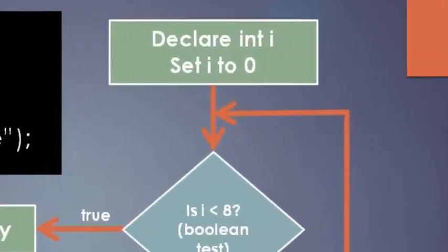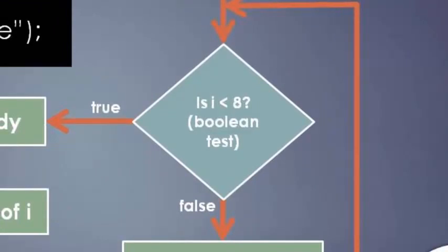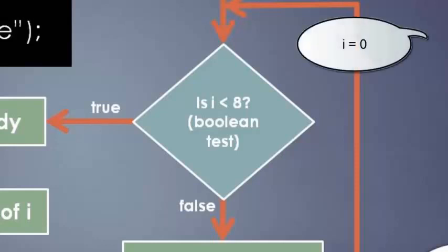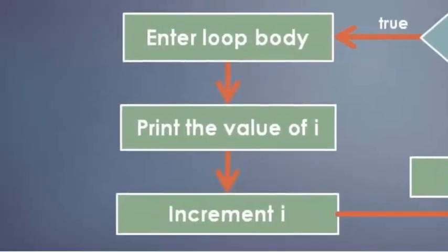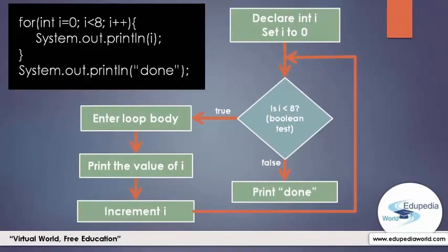This is the first part — the declaration of the int variable i, initialized with the value 0. Then we make a decision: check whether i is less than 8. If i is less than 8, we go in the true path; if not, we go in the false path. The value of i is 0, and 0 is less than 8, so we go in the true path. We enter the loop body, print the value of i which is 0, and then increment i by 1.